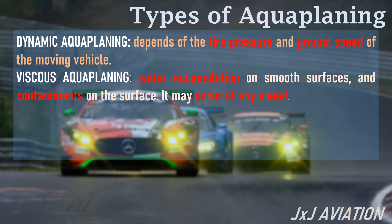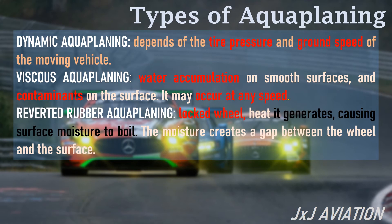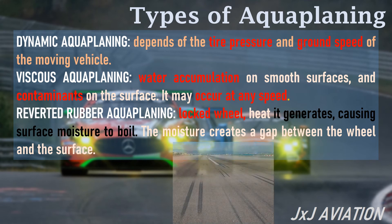Reverted rubber aquaplaning occurs because of a locked wheel and the heat it generates, causing the surface moisture to boil. The moisture creates a gap between the wheel and the surface. This is the only type of aquaplaning that leaves a mark on the road or runway.